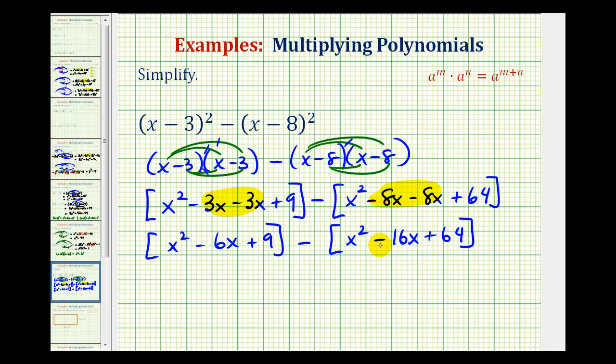And now we're going to clear these parentheses so that we can combine the like terms. So we can think of putting a positive one here and distributing. And then because we're subtracting this entire polynomial, if we put a one here, we'll distribute a negative one, which will change the sign of each of these terms.